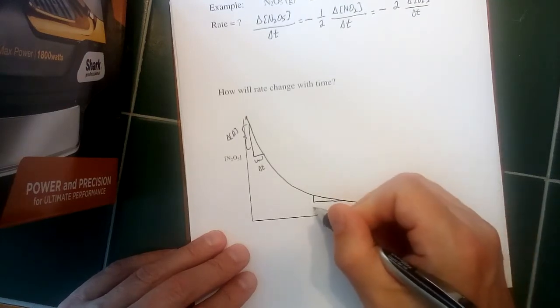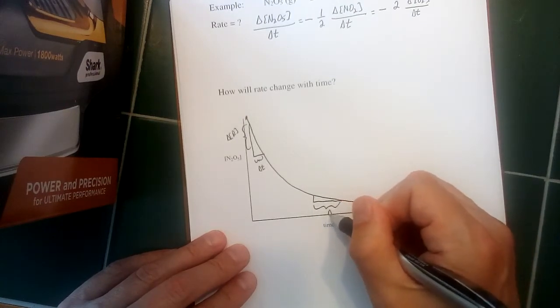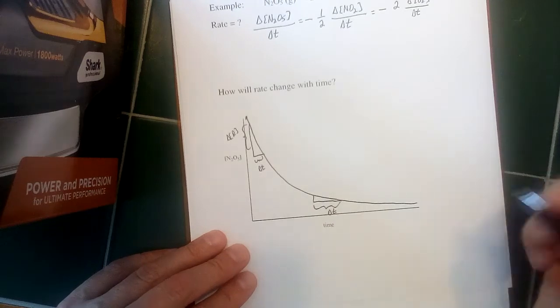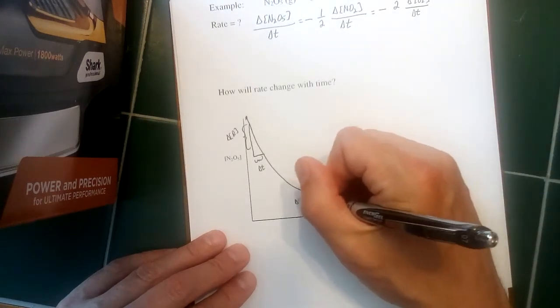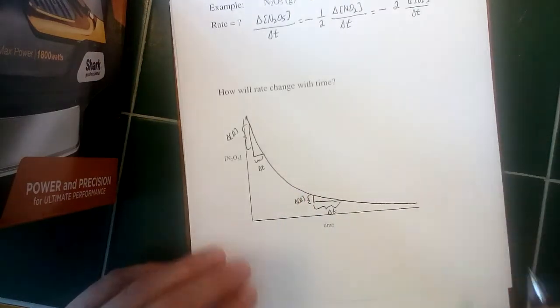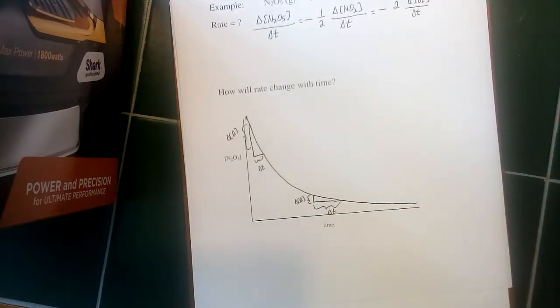Late in a reaction, we kind of get the opposite. There's a fairly large time interval here. This is the interval I'm looking at. And there's a pretty small amount of change in the concentration of the reactant. So the rate is getting slower here as time goes on. The rate is going down as time progresses.